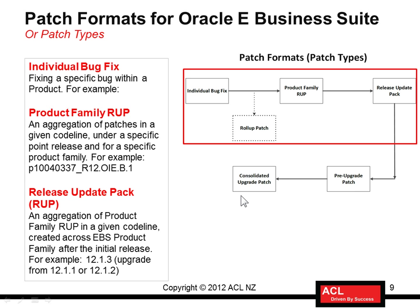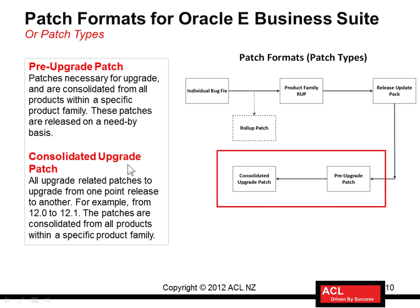A Release Update Pack holds good for a point release — to upgrade from one point release to a higher one. The next types are the pre-upgrade patch and the consolidated upgrade patch. A consolidated upgrade patch is what you apply when upgrading between full releases. The Release Update Pack handles point releases like 12.1.1 to 12.1.2, but if you need to upgrade from one release to another — for instance from 12.0 to 12.1, or from 12.1 to 12.2 — that is where you apply a consolidated upgrade patch.